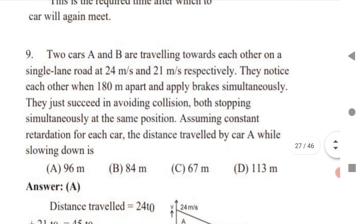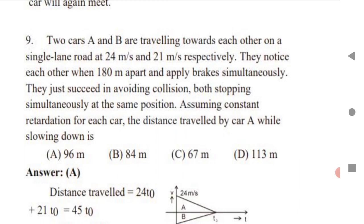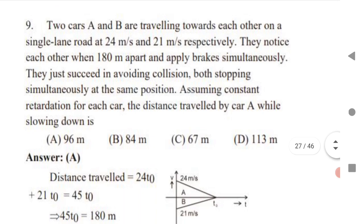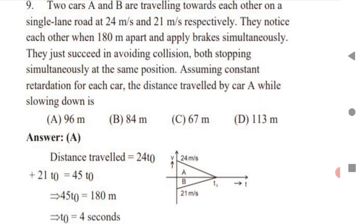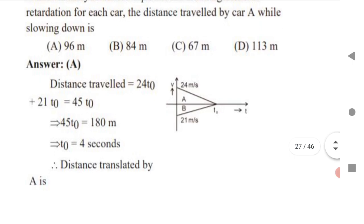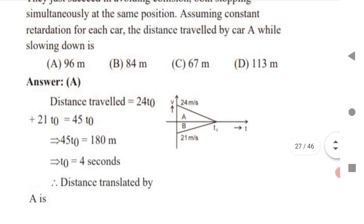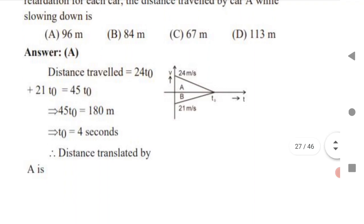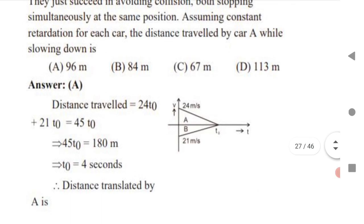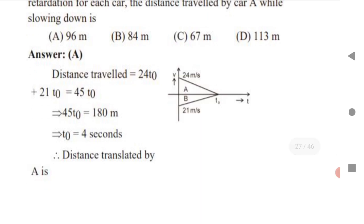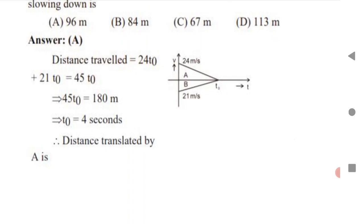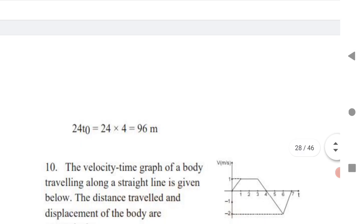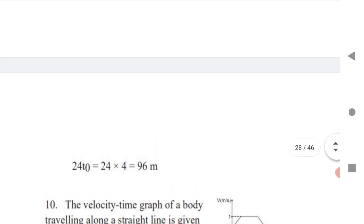Question 9: two cars A and B are traveling toward each other on a single-lane road at 24 m/s and 21 m/s respectively. They notice each other when 180 m apart and apply brakes simultaneously, just succeeding in avoiding a collision — both stop at the same position. Assuming constant retardation, the distance traveled by car A while slowing down: distance = 24t₀, giving t₀ = 4 s, so distance traveled by A = 24 × 4 = 96 meters.